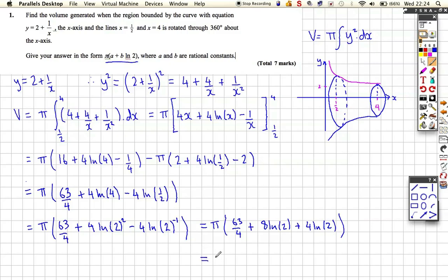And then our final step is therefore just pi multiplied by 63 over 4 plus 12 ln 2. And that's in the expression that we wanted, where a is 63 over 4 or 15.75 in decimal form, and b is 12. Okay, so now we're finished.